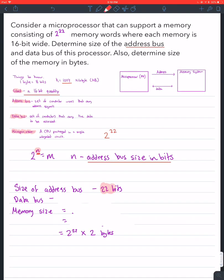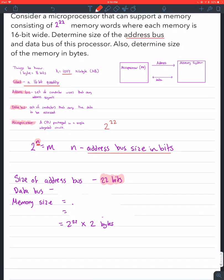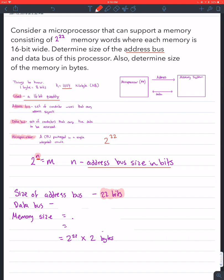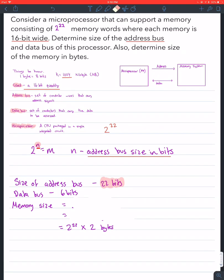Now it wants the data bus size. Well, the data bus size is just going to be the size that he gave us in the question, which was 16-bit wide. That's going to be the size of the data bus. It's that simple.